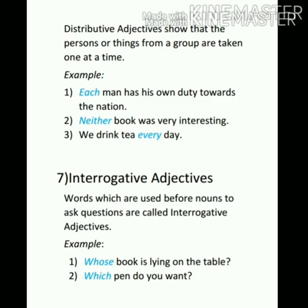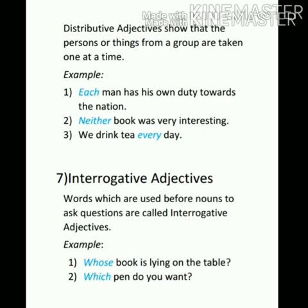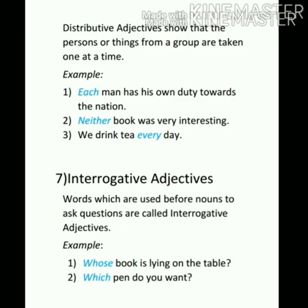Distributive adjectives show that persons or things from a group are taken one at a time. When we have two or more things or persons and want to denote each one separately, we use distributive adjectives such as each, every, either, and neither. For example: each man has his own duty towards the nation; neither book was very interesting; we drink tea every day. We use each or every for all items in a group, and either or neither when referring to one of two things.